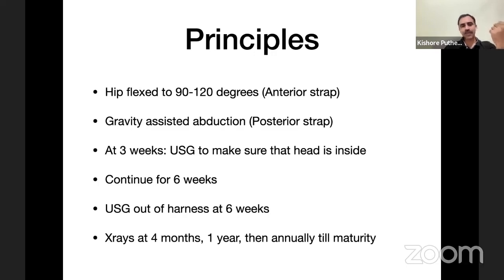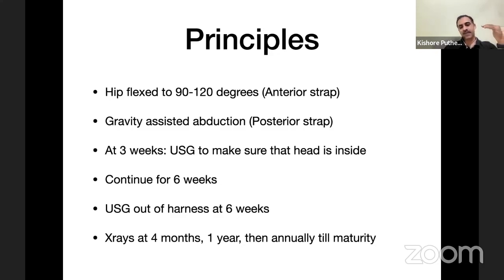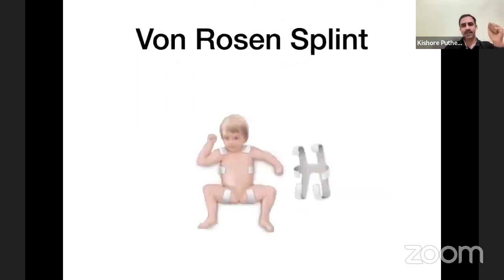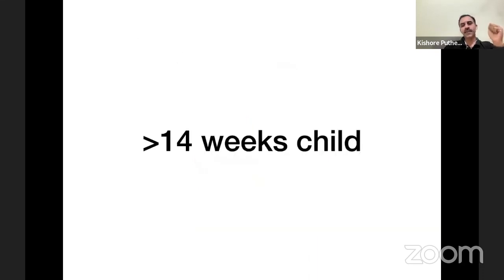The anterior strap keeps the hip flexed around 100 degrees; gravity-assisted abduction is provided using the posterior strap. At three weeks, an ultrasound is done to confirm the head is inside. Continue for six weeks, then ultrasound to reassess. If everything is fine, take X-ray at four months, one year, and annually. If the harness fails at three weeks, stop and give a rigid abduction orthosis such as the von Rosen splint.